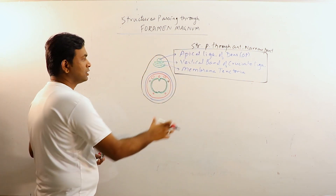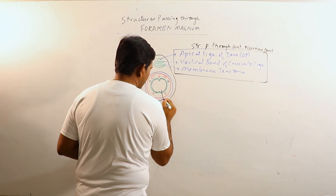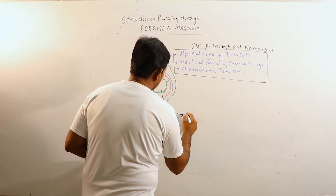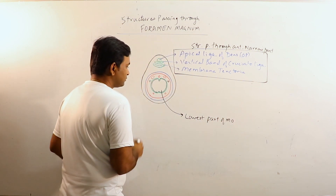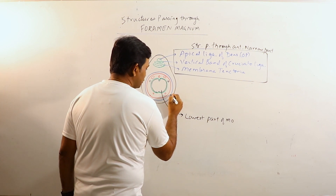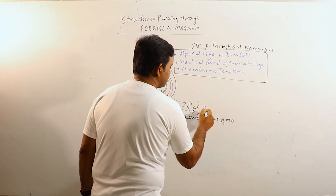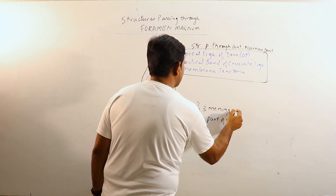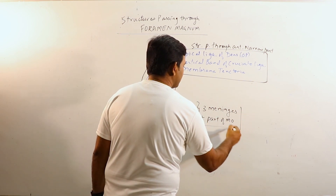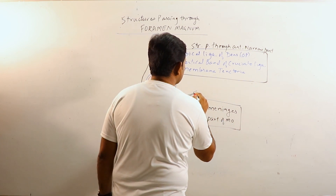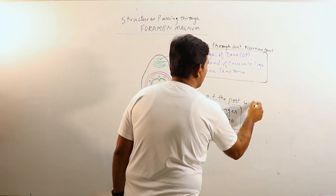The structures passing through the broad posterior part are the lowest part of Medulla Oblongata and the three meninges: Dura Mater, Arachnoid, and Pia Mater. So three meninges and the lowest part of Medulla Oblongata pass through the posterior wide or broad part.